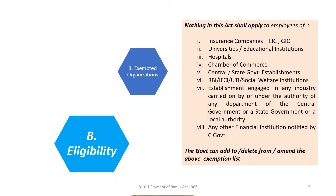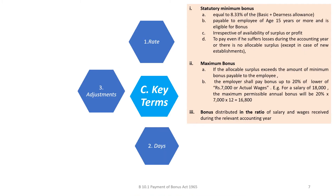There are certain organizations kept outside the scope of the Act, like LIC, GIC, RBI, IFCI, UTI, educational institutions, social welfare institutions, and financial institutions notified by the central government. The government can add or delete from this list. Worth noting that all these organizations have internally an equally rewarding ex-gratia payment system, which is a consolation for their respective employees.